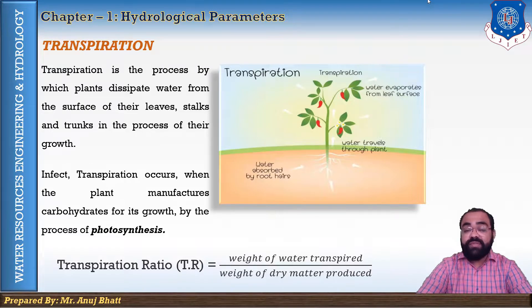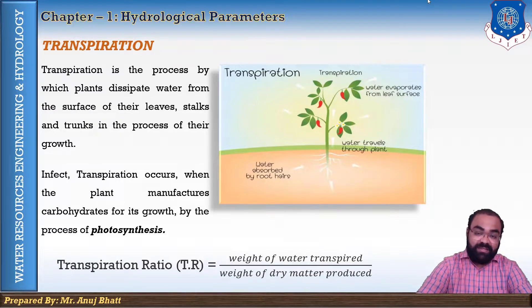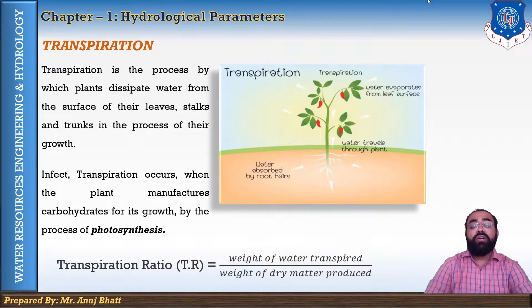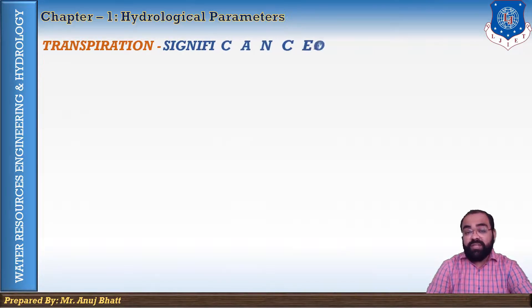Talking about the drawbacks of transpiration: transpiration results in water scarcity that can damage the plants due to desiccation. It also causes wilting of the leaves and results in stunted growth of the plants.